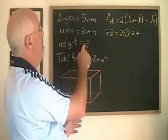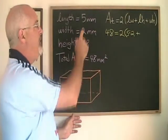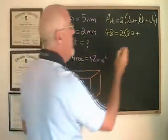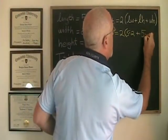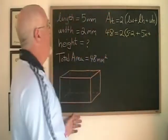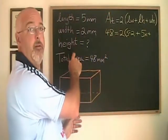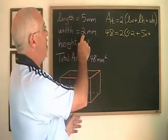LH is length times height which we have to express as 5x because we don't know the height. WH is width times height which we have to express as 2x.